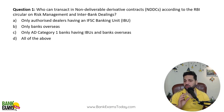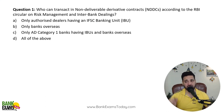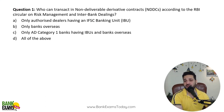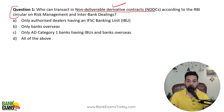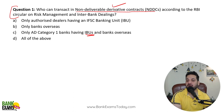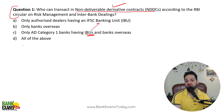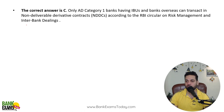Who can transact in non-deliverable derivative contracts according to the RBI Circular on Risk Management and Interbank Dealings? Only AD Category 1 banks having IBU — IFSC Banking Units — and banks overseas can deal in non-deliverable derivative contracts.